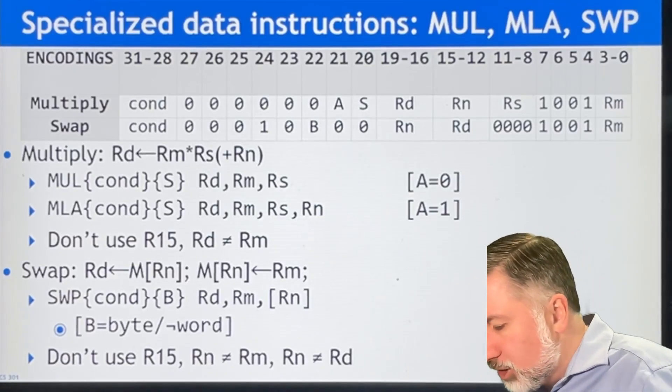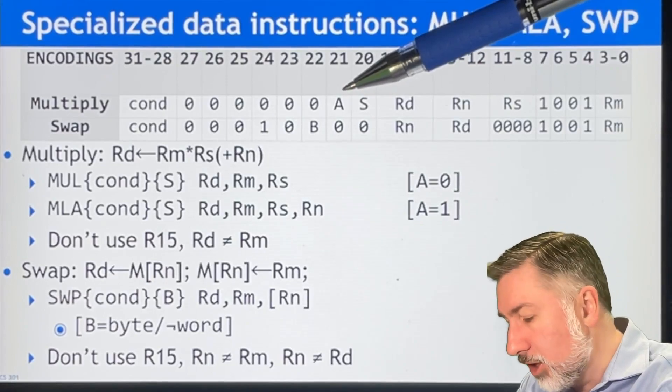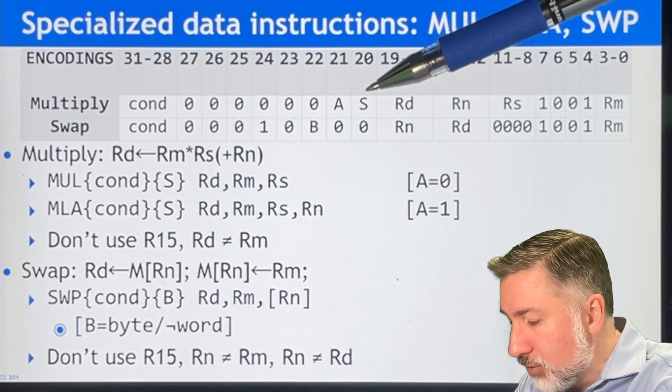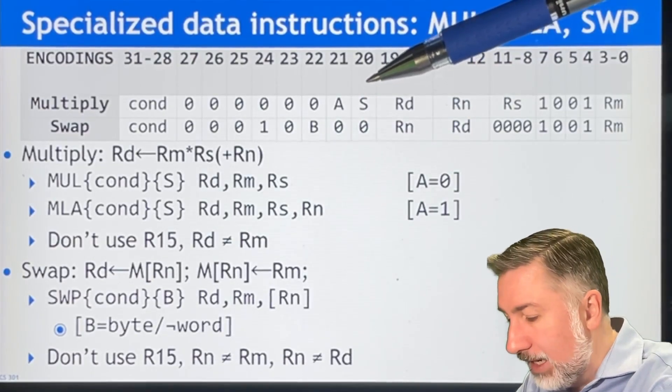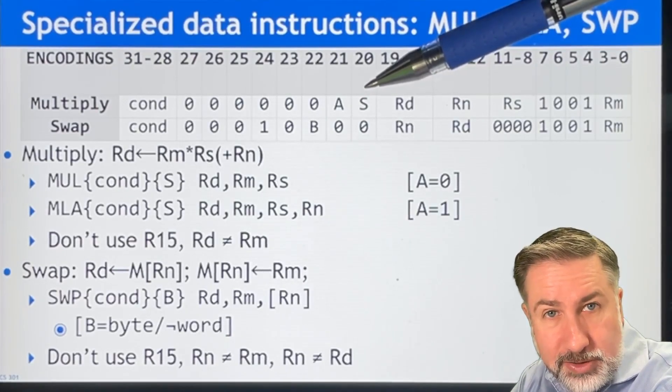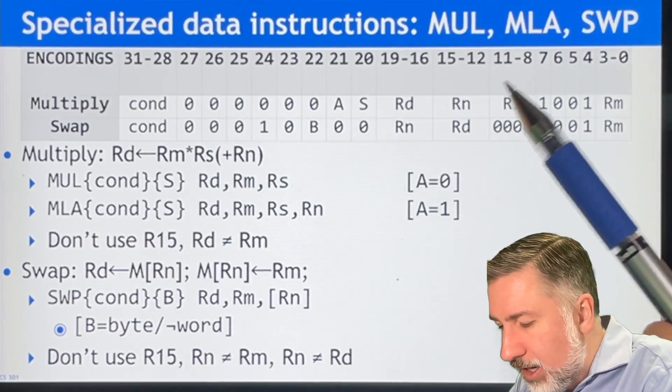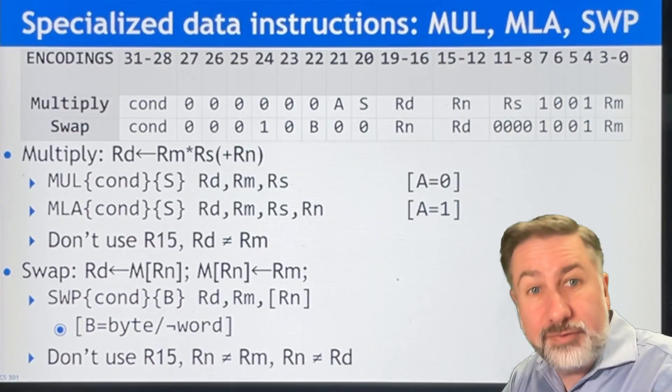So the multiply instruction, you have two flags. You have the flag A which says whether or not you're going to do the add, and you have the flag S which specifies whether or not you're going to store the condition code register. And then you specify four registers: RD, RN, RS, and RM. We'll look at what they're for in a second.